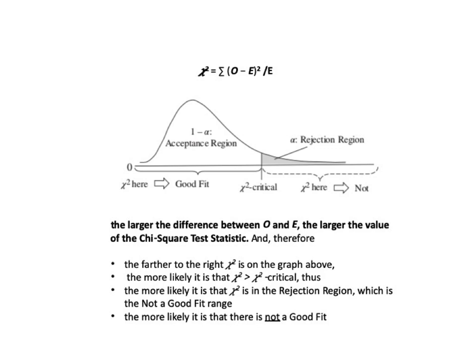The farther to the right chi-square is on the graph, the more likely it is that chi-square is greater than chi-square critical, and thus the more likely it is that chi-square is in the shaded region — which is the not-a-good-fit range. So the more likely it is there is not a good fit.